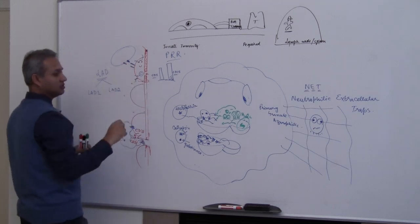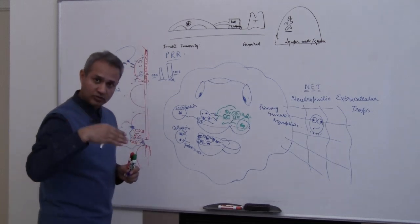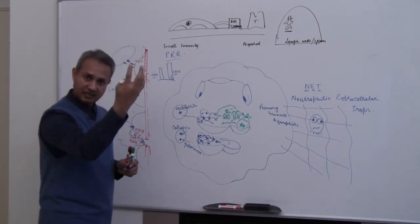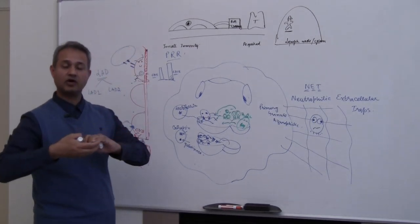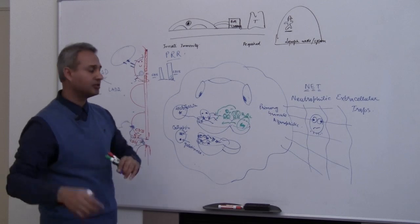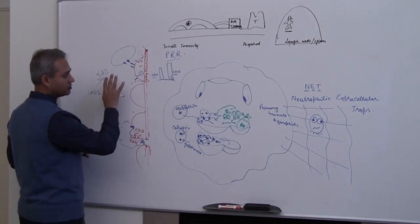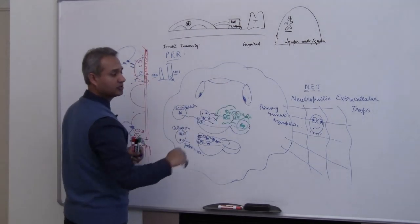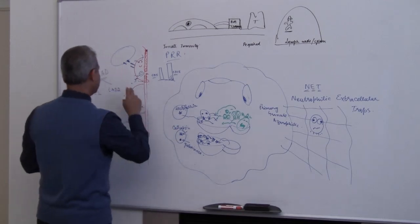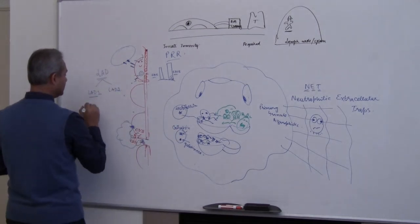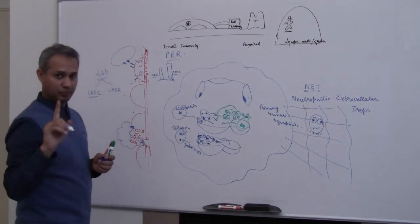When they cannot engage, the leukocyte comes in, slows down - selectin slows it down, stasis slows it down - but it cannot create adhesion, cannot stop there, so it keeps going. This neutrophil which had to come into the tissue to do its function is not there. That is leukocyte adhesion deficiency type 1.